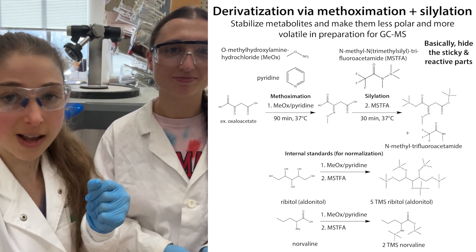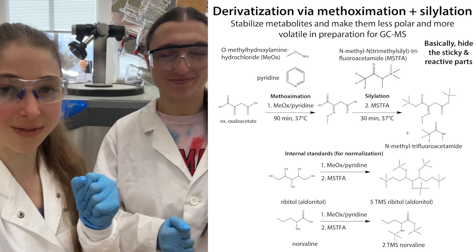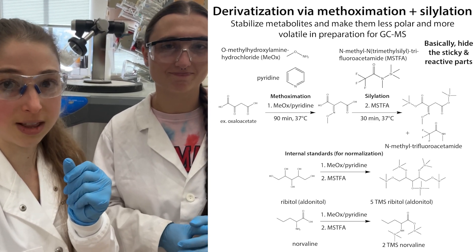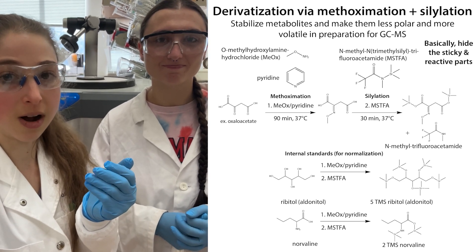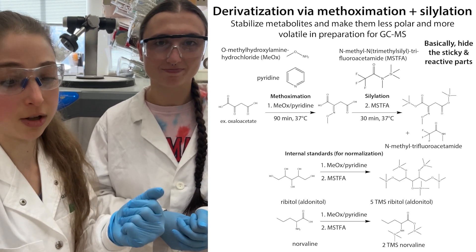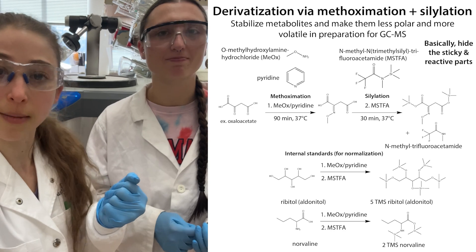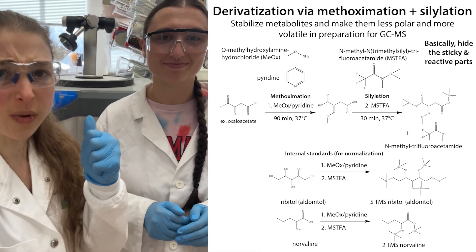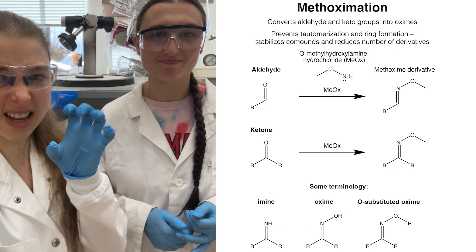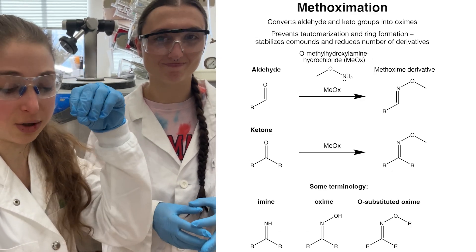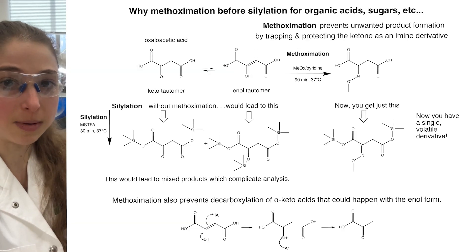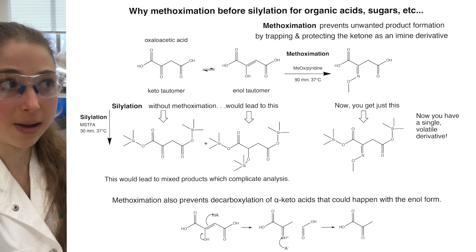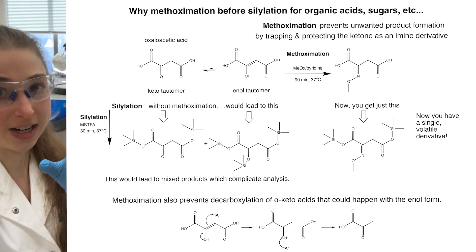So we need to derivatize them — treat them with chemicals that basically hide the parts that make them stick together. We methoximate them, which adds methoxamine groups onto the aldehydes and ketones, hiding those groups and keeping the molecules from tautomerizing and ring-forming. That prevents more complicated products in the next step.